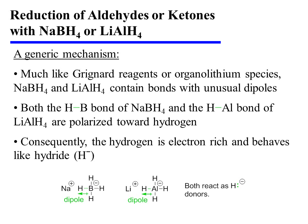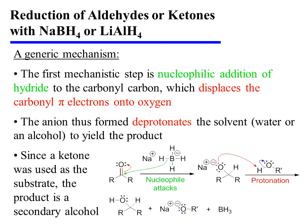Much like Grignard reagents or organolithium species, sodium borohydride and lithium aluminum hydride contain bonds with unusual dipoles. Both the hydrogen-boron bond of sodium borohydride and the hydrogen-aluminum bond of lithium aluminum hydride are polarized toward hydrogen. Consequently, the hydrogen is electron-rich and behaves as though it were H-minus, or hydride. In the first mechanistic step, the hydride is nucleophilically added to the electrophilic carbonyl carbon.